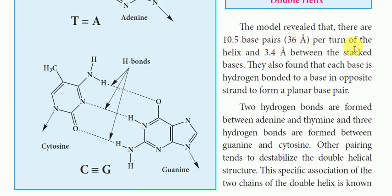The model involves 36 angstroms per turn of the helix and 3.4 angstroms between the stacked bases. It was also found that each base is hydrogen bonded to a base in the opposite strand to form a planar base pair. There is hydrogen bonding between these bases.